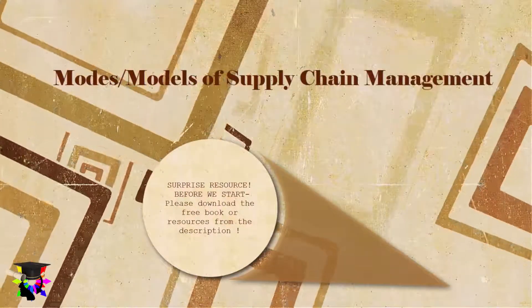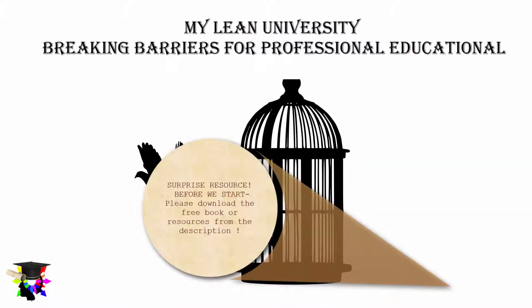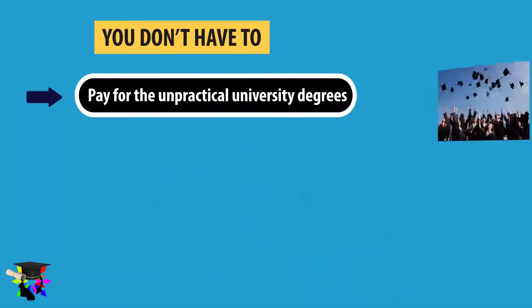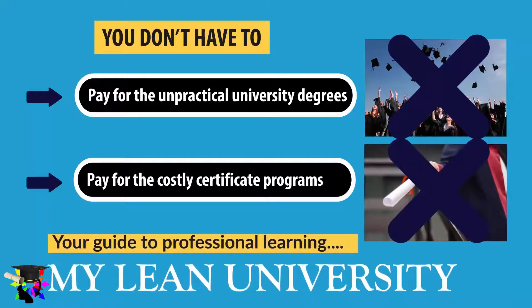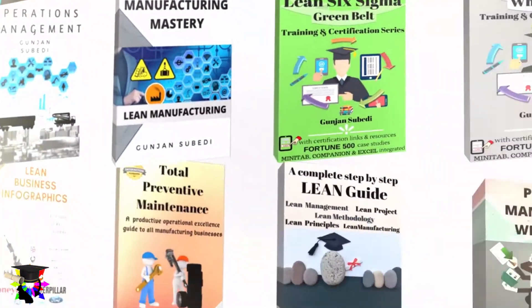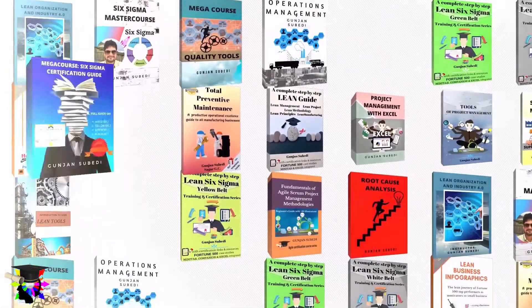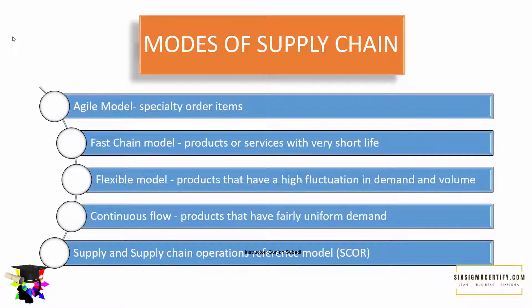There are various supply chain models or modes of the supply chain because of the huge differences in type of business. The supply chain modes or supply chain models could be: the Agile model, which could be much beneficial for specialty order items; the Fast chain model for products or services with a very short life; and the Flexible model for products that have high fluctuation in demand and volume.